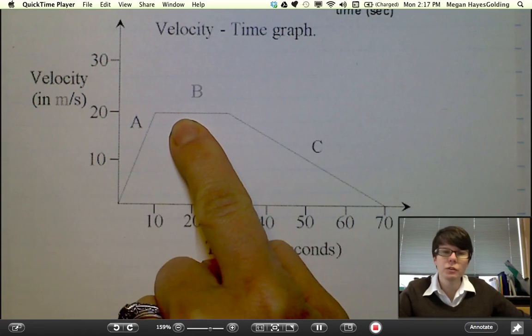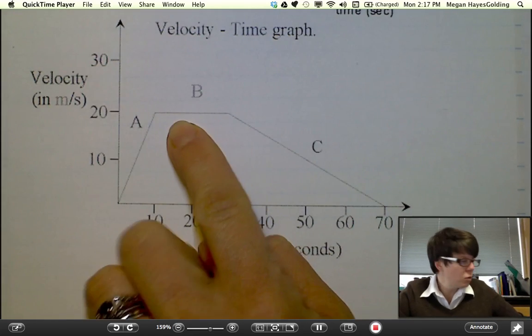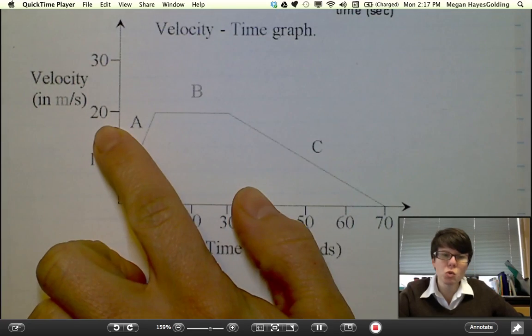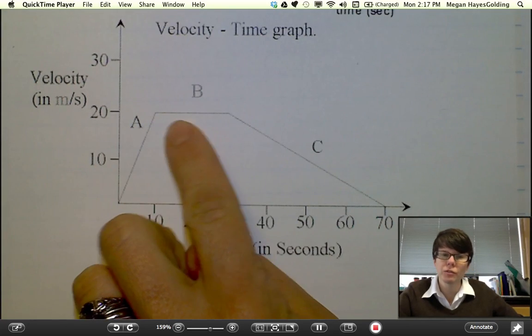this is a case of constant velocity. The velocity, or y-coordinate, remains at 20 for the entire duration of this segment of the graph.